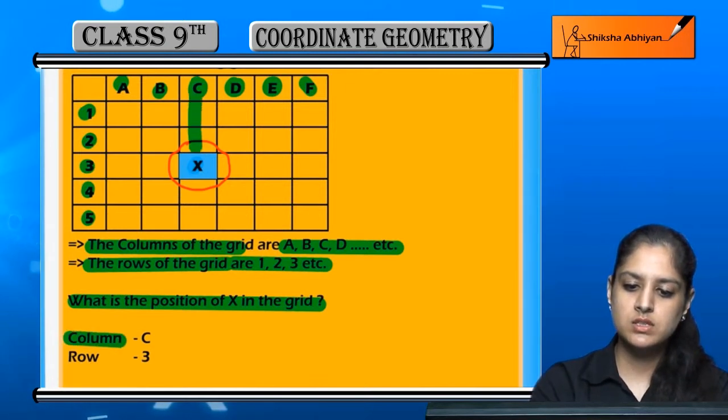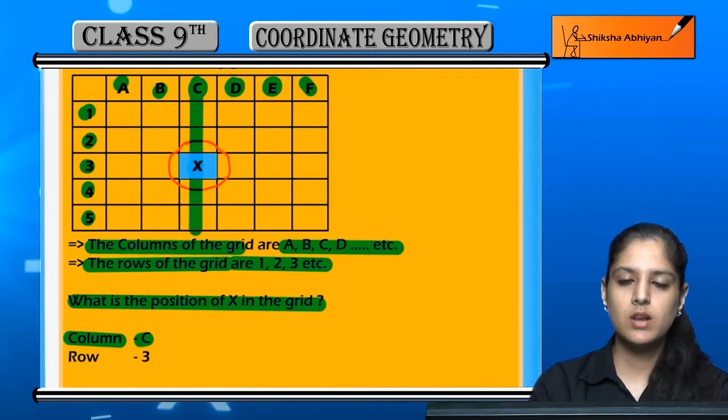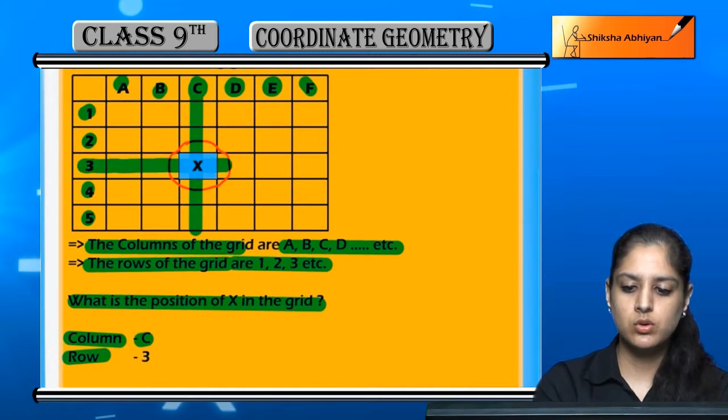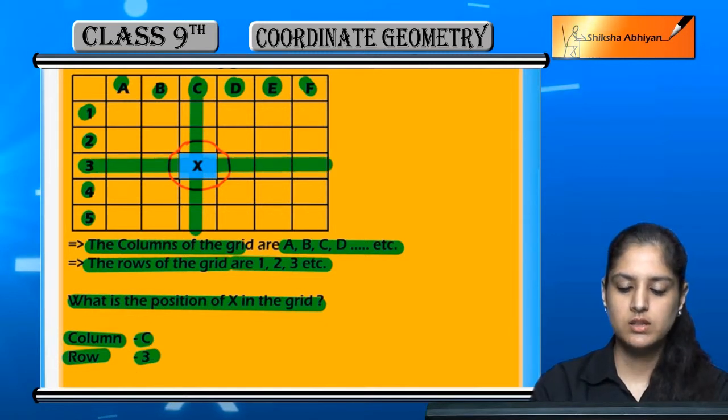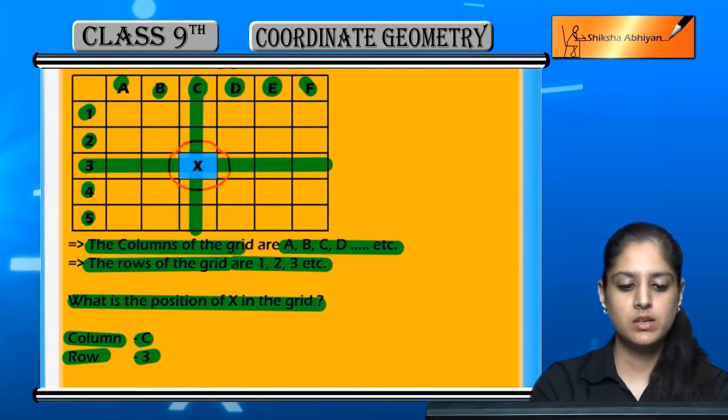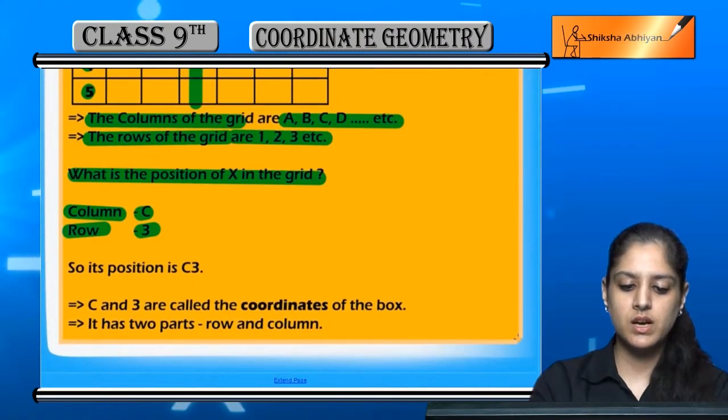So if we look at the column, this is column C. X is in column C. And if we look at the row, this is row 3. So column C, row 3. Using this, the position is C3.